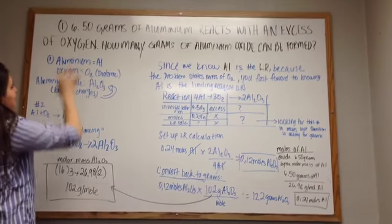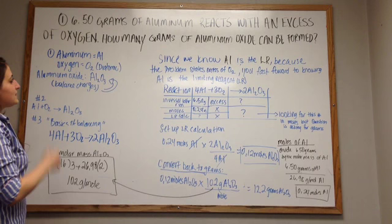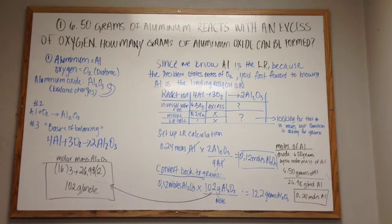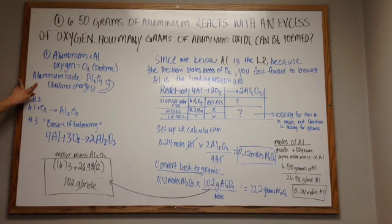Number one states that we have 6.50 grams of aluminum reacting with an excess of oxygen, and we're trying to figure out how many grams of aluminum oxide can be formed through this reaction. We know aluminum is Al, and oxygen is O2 because it's diatomic, and aluminum oxide, after balancing the charges of Al and oxygen, we end up with Al2O3.